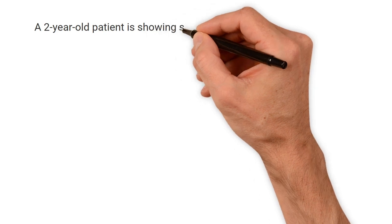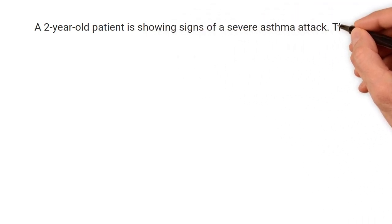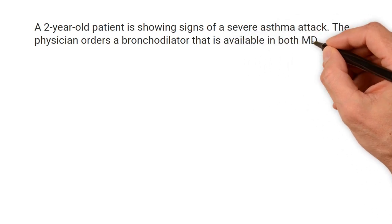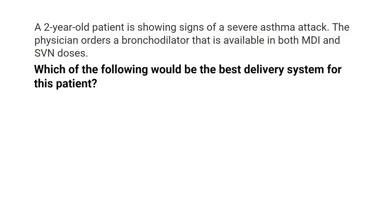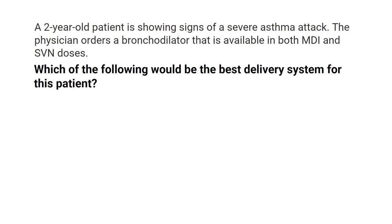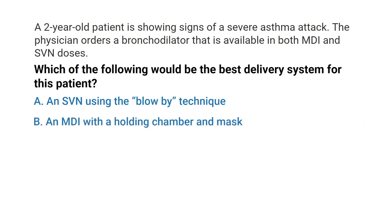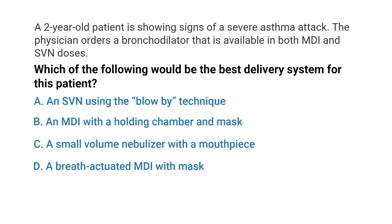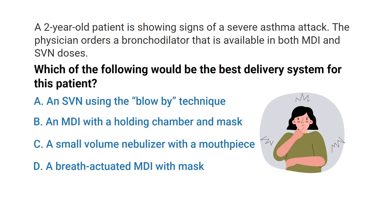A two-year-old patient is showing signs of a severe asthma attack. The physician orders a bronchodilator available in both MDI and SVN doses. Which of the following would be the best delivery system for this patient? A) An SVN using the blow-by technique, B) An MDI with a holding chamber and mask, C) A small volume nebulizer with a mouthpiece, or D) A breath-actuated MDI with a mask?